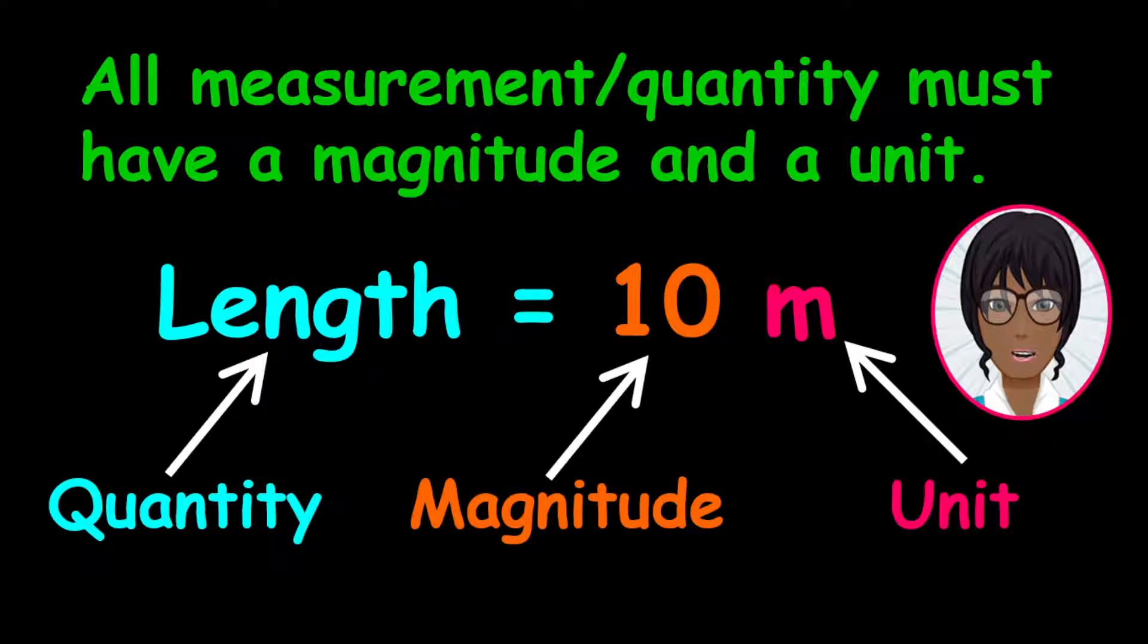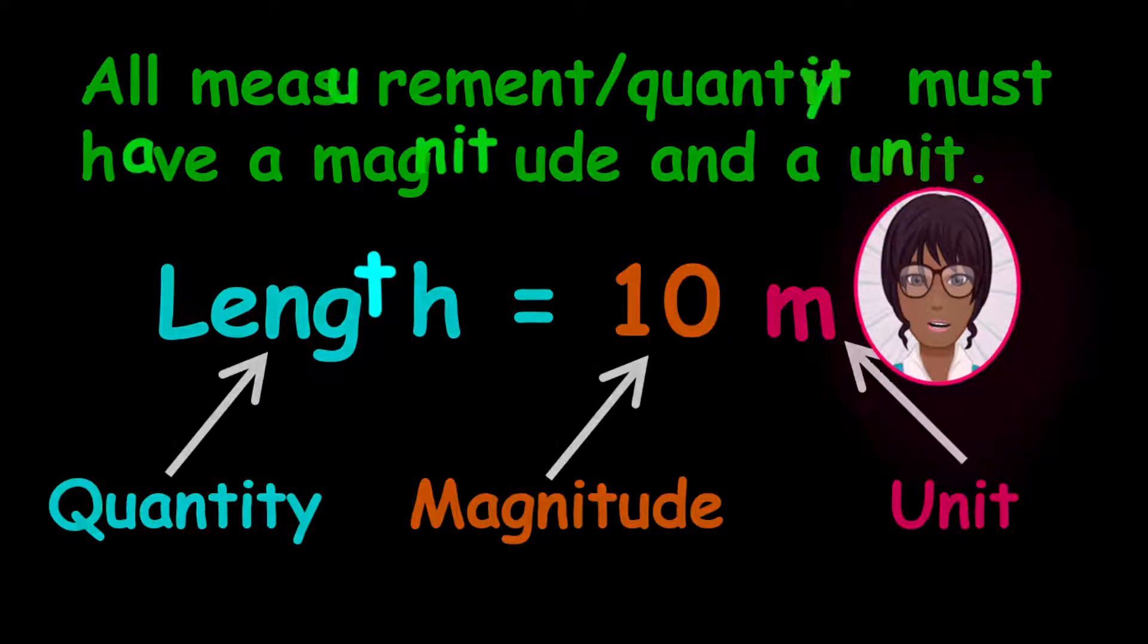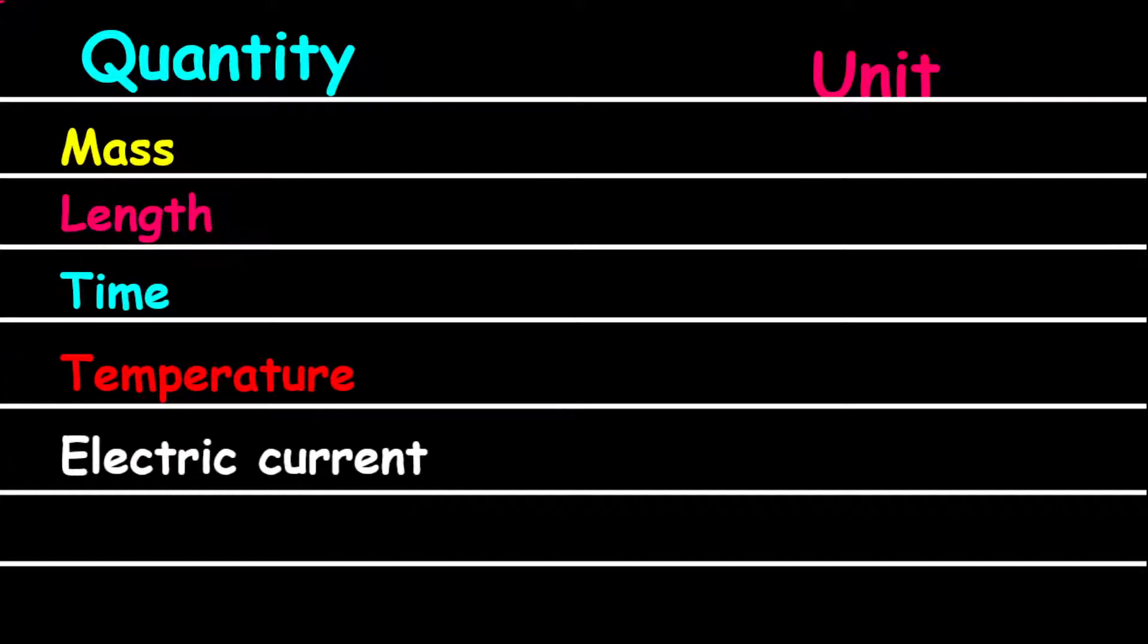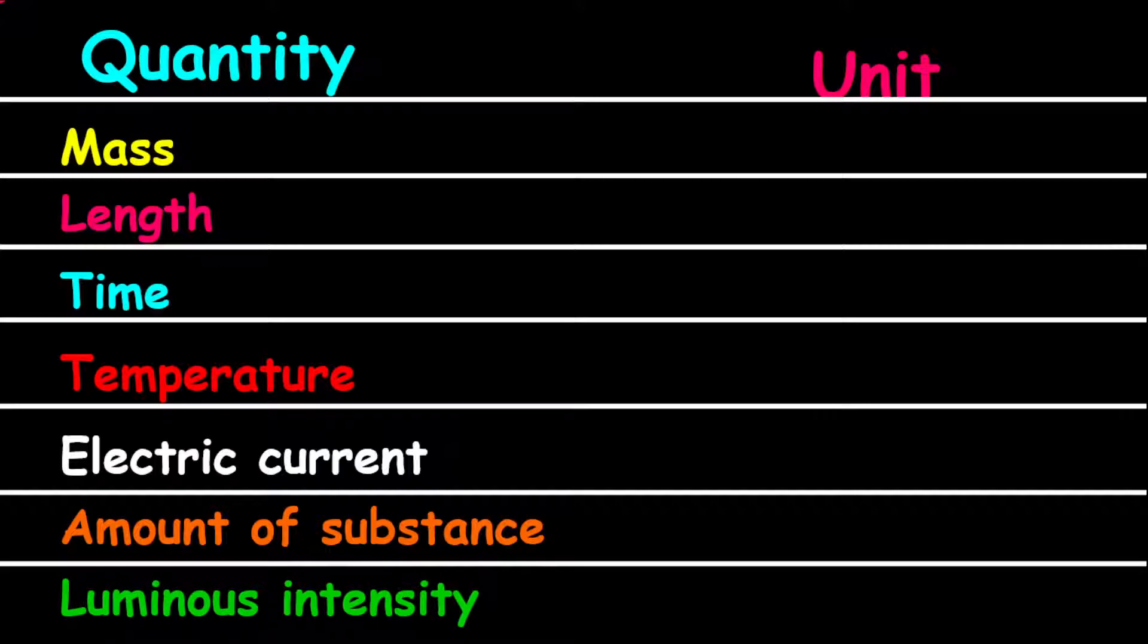Now let's look at the basic quantities and their units. Please note that for junior or basic level examinations, only 5 of the 7 basic quantities are usually tested. These are mass, length, time, temperature, and electric current. The amount of substance and luminous intensity are generally included for more advanced level examinations.